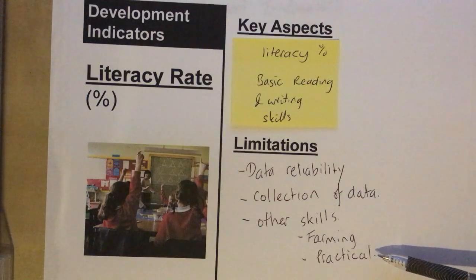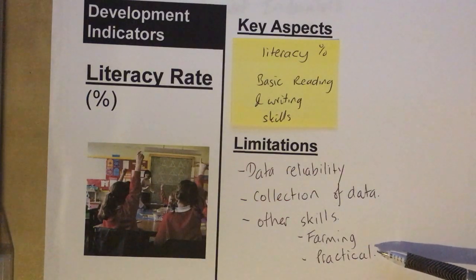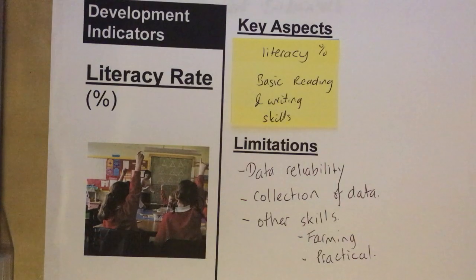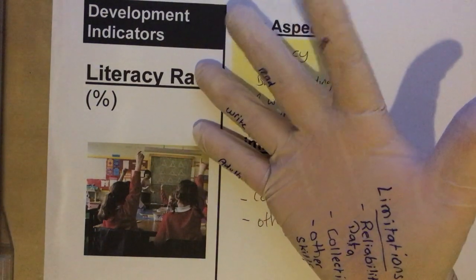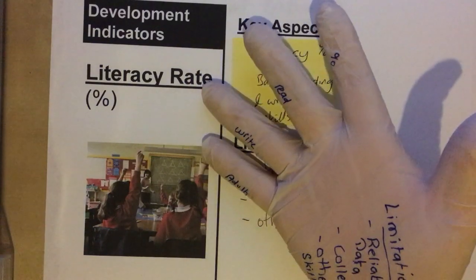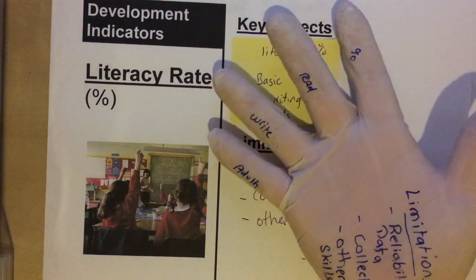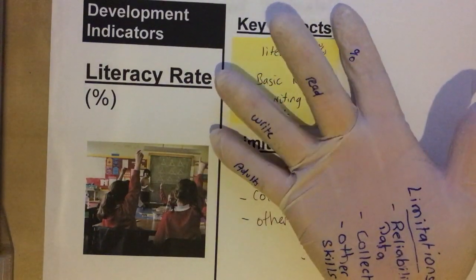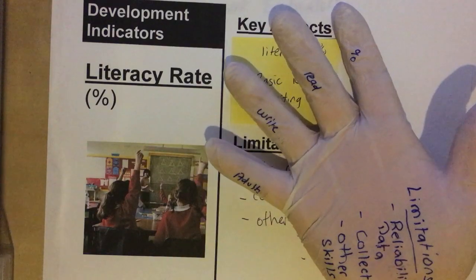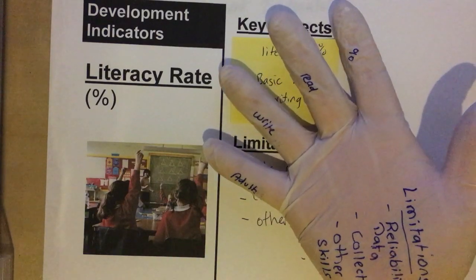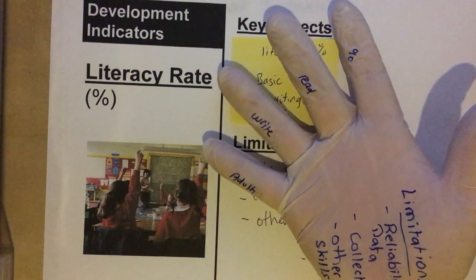So, to recap: the literacy rate is a good measure. It is expressed as a percentage of the number of people in the country that can read and write — specifically, the number of adults that can read and write to a basic level.